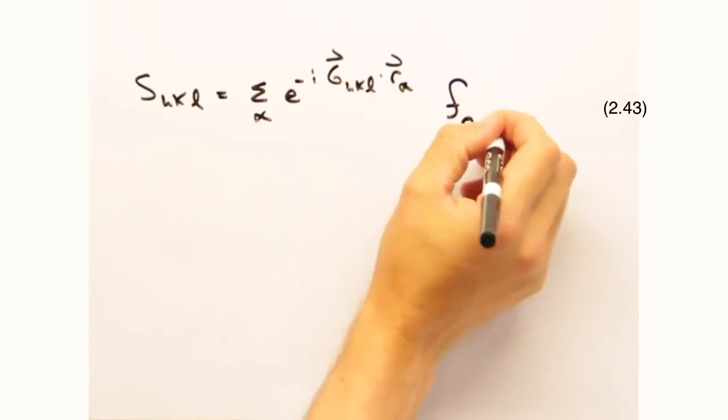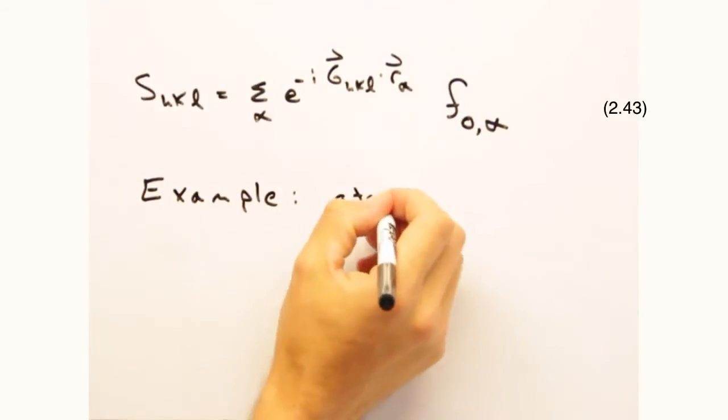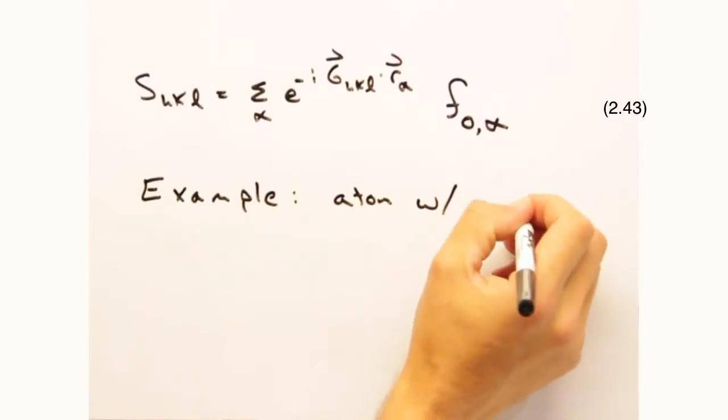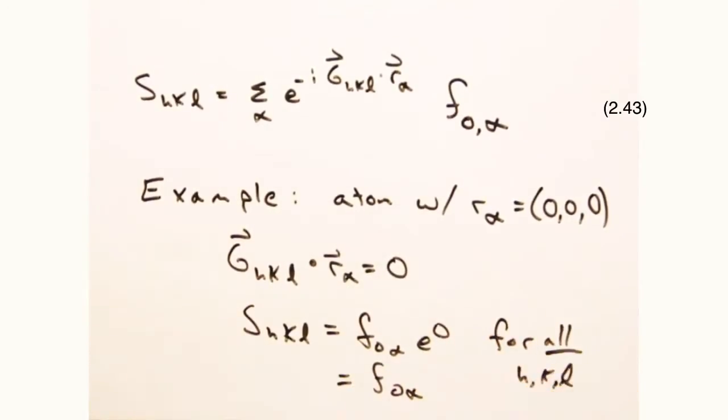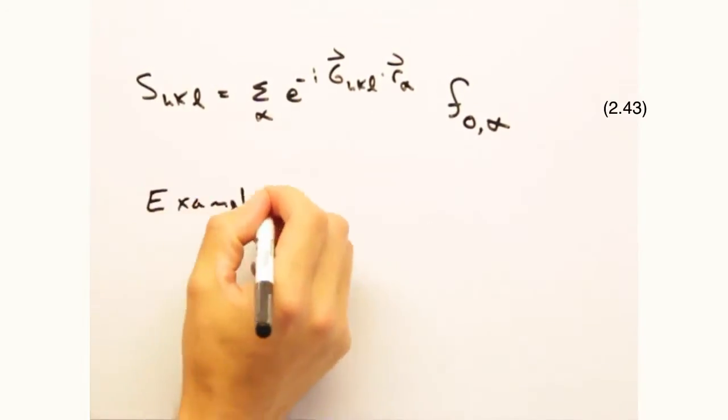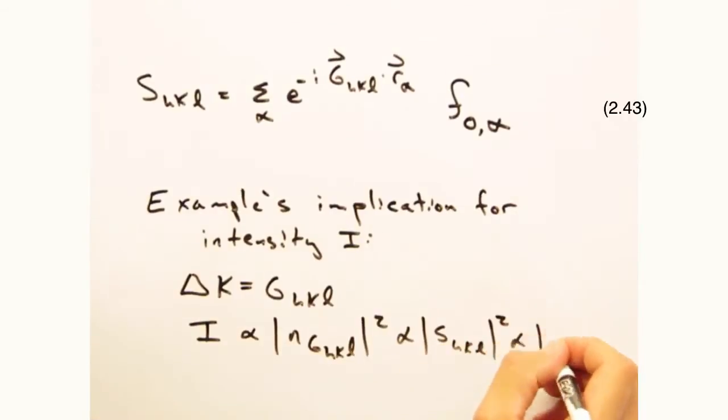Okay, so what would the structure factor look like in a simple cubic system? The basis for this case would just be one atom at r_alpha equals zero zero zero. G_hkl dot r_alpha would always be zero. So the structure factor would be f_naught for any hkl. So for every situation where delta k equals g, we have an intensity simply determined by the atomic form factor f_naught.